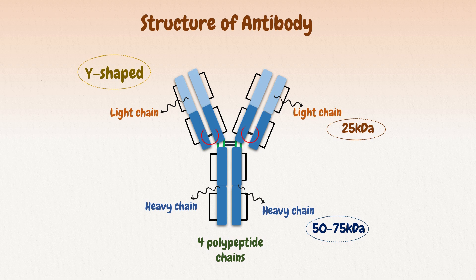Each light chain is connected to its partner heavy chain by a disulfide bond between corresponding cysteine residues. The two heavy chains are also connected to one another via disulfide bonds located outside of the antigen-binding regions. This disulfide linkage between different chains is called inter-chain linkage or inter-chain disulfide bond.